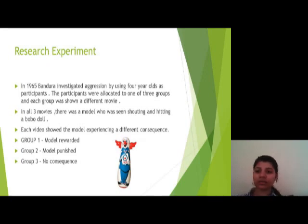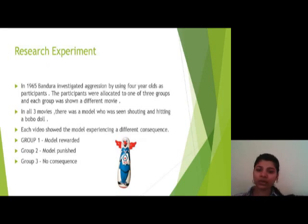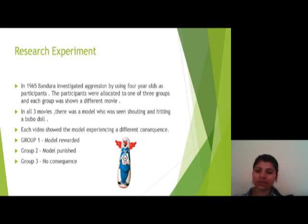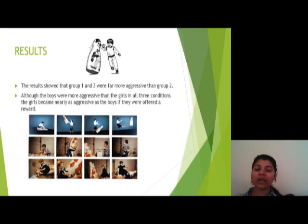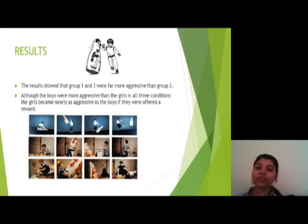There was a research study done by Bandura in 1965. He investigated aggression using four-year-olds as participants. The participants were allocated to one of three groups, and each group was shown a different movie. In all three movies, there was a model hitting a Bobo doll. Each video showed the model experiencing different consequences: Group 1 — model rewarded; Group 2 — model punished; Group 3 — no consequences. The results showed that Groups 1 and 3 were far more aggressive than Group 2. Although boys were more aggressive than girls in all three conditions, girls became nearly as aggressive as boys if they were offered a reward.